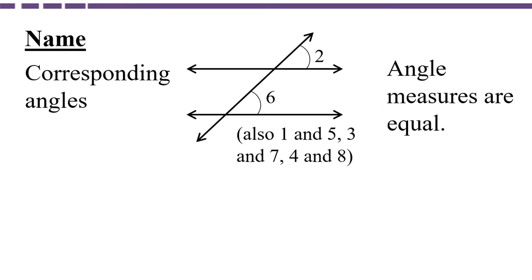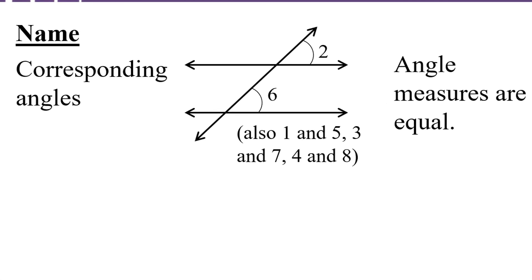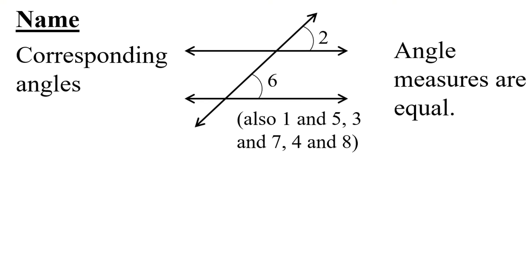Angles 2 and 6 and angles like them that are on the same side of the transversal and also on corresponding sides of the parallel lines are called corresponding angles. These types of angles are equal in measure.